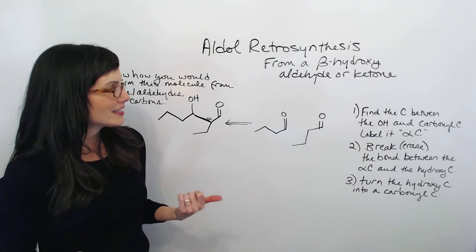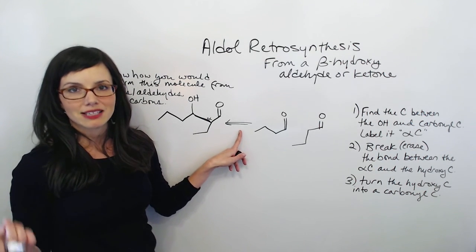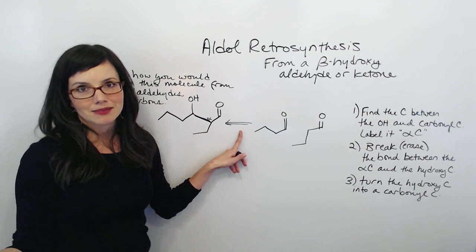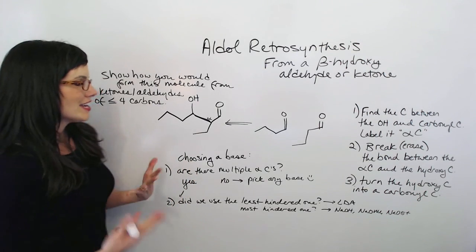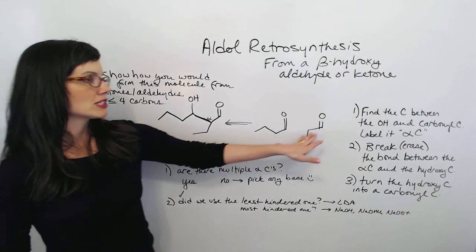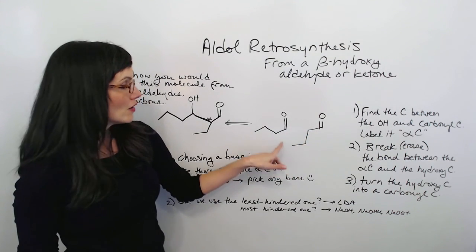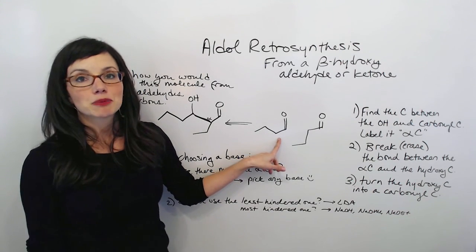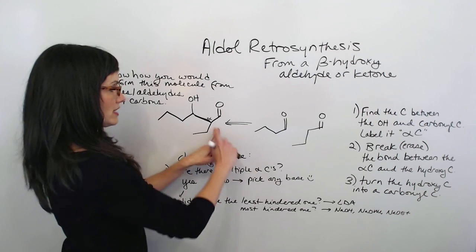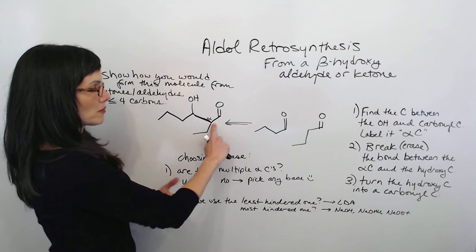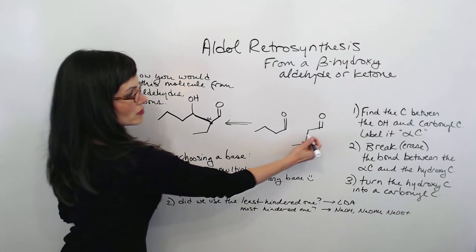Now our next step is simply to decide what reagent made this happen — we have to choose a base. Here's how we choose a base: it all depends on what our alpha-carbons look like in the starting materials we've created. What kind of alpha-carbons do we have, and specifically, what alpha-carbon is the one that attacked? This is the alpha-carbon that we identified, right here.